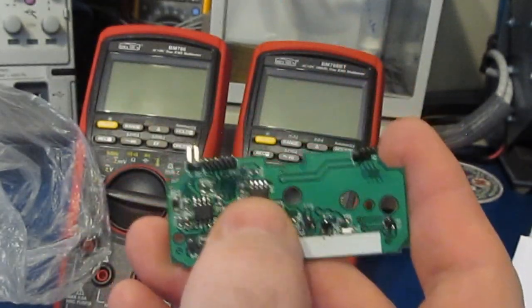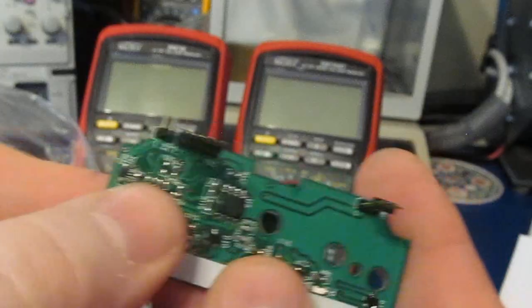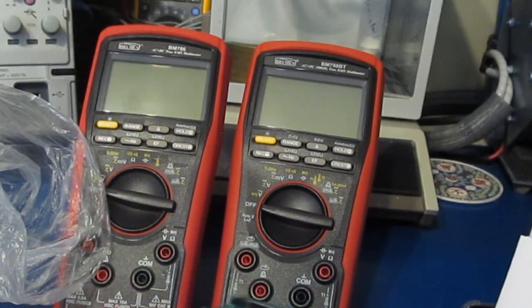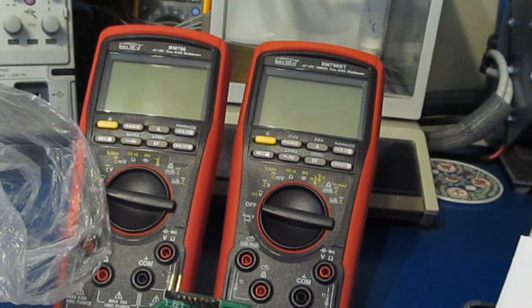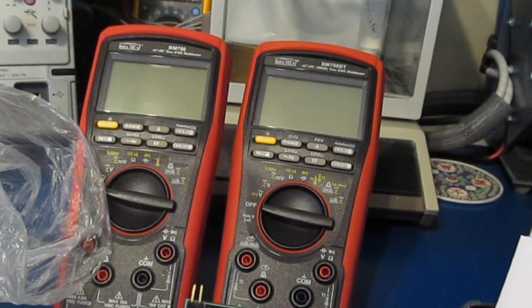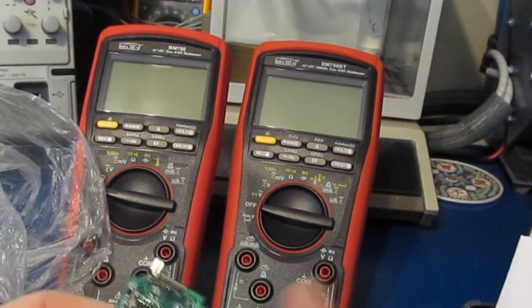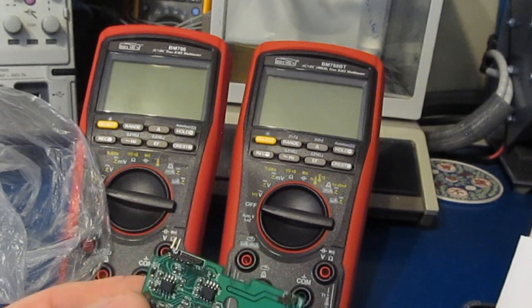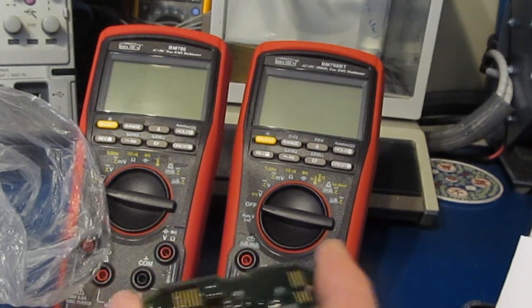But when I checked the EEPROM on the left, this is designated U5, and this is a part number 24CS04. Now when I read that part out, it was basically loaded. So I was pretty sure that was the coefficients. So what I did is I took this circuit board and just plugged this into the BM786.